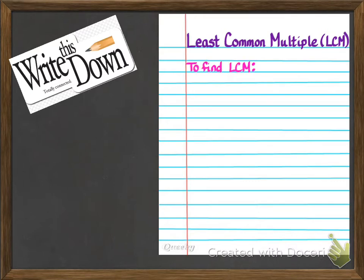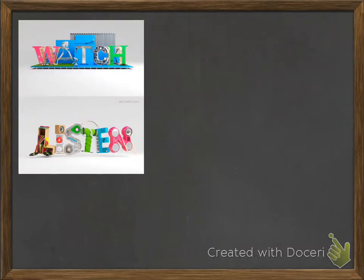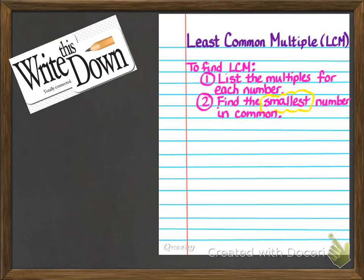We're going to list how to find the LCM. The first thing we're going to do is number 1: list the multiples for each number. Step 2: we're going to find the smallest number in common. Remember, you may need to pause your video to get all this written down.